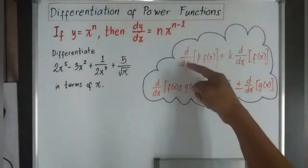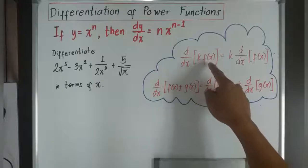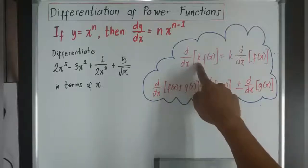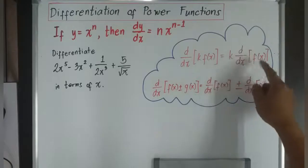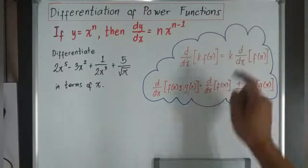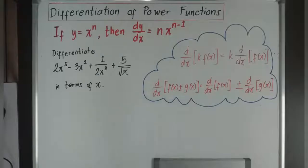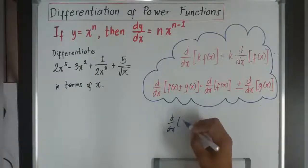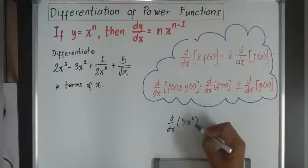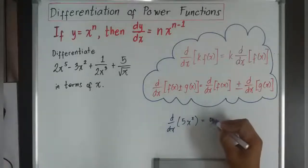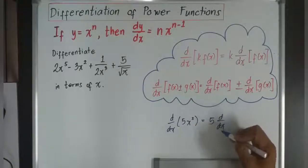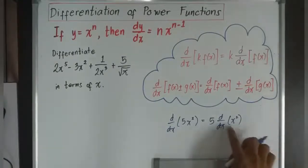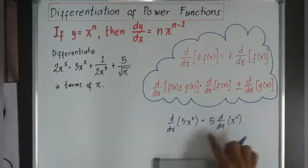The first rule says that the derivative of a function where the function has an attached constant value k is equivalent to the derivative of the function multiplied by k. For example, d over dx of 5x squared will just become 5 times d over dx of x squared. Basically, I brought out the 5 and then I get the derivative of the function x squared.